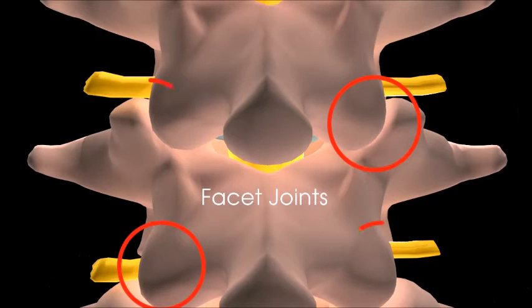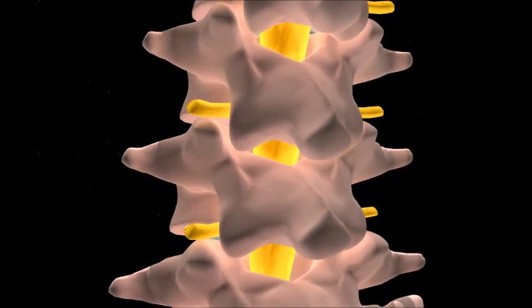Facet joints are little joints situated throughout the spinal column. They can be a common source of back pain.